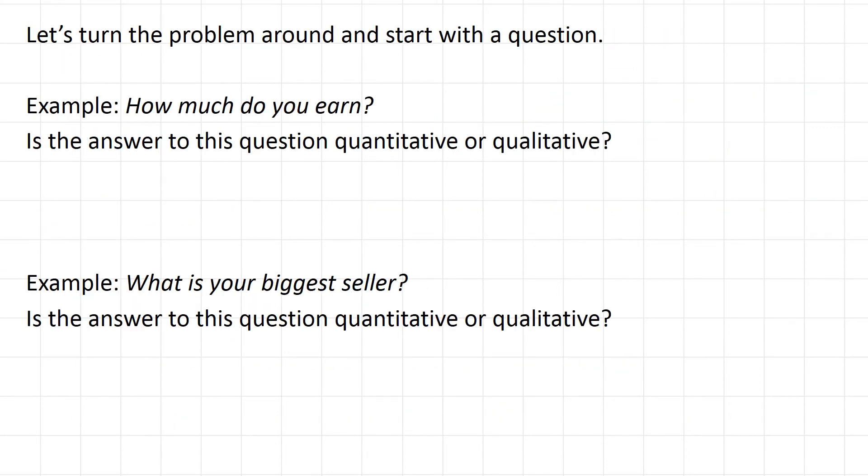Let's turn this problem around and start with a question, and then decide whether or not the answer to the question would be a quantitative or qualitative answer. So how much do you earn? You would probably say, oh, I earn maybe $12.50 an hour, or I will make $36,000 a year.